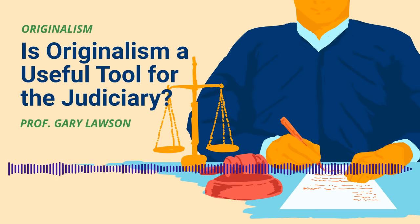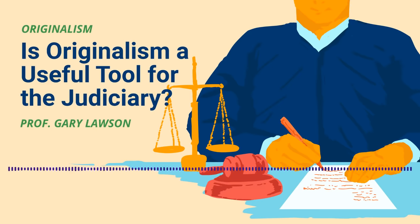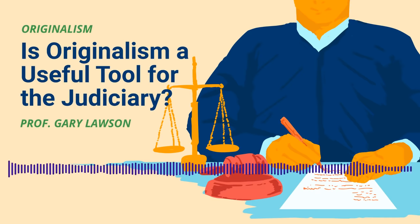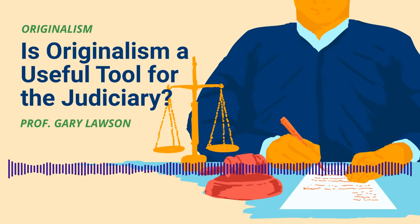The Seventh Amendment orders federal courts to give a great deal of weight to fact-finding by juries in civil cases — they don't have discretion, they're ordered to do it. The double jeopardy provision of the Fifth Amendment orders federal courts to give not merely deference, but absolutely conclusive, unreviewable deference to fact-finding that results in acquittals in criminal cases.